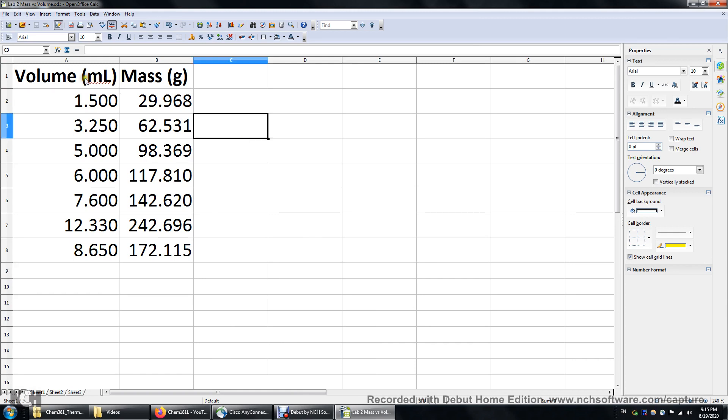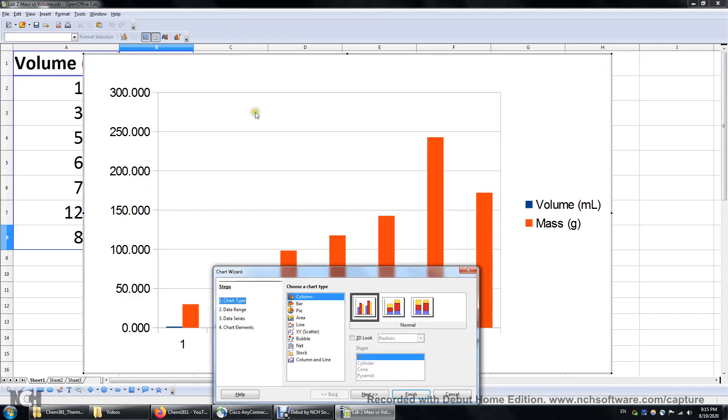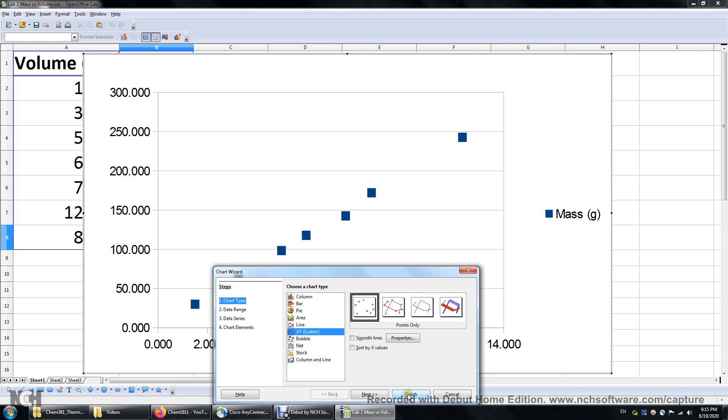So first we will select all the data, look for the chart icon, click. This is the default column chart. We'll switch to the XY scatter chart. Finish.